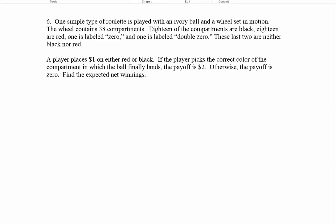We're going to find the expected value of the winnings. The player is placing a dollar bet, and red and black will have the same expected value because both have 18 compartments. This is not a combined probability with red and black together — the player is going to place the bet for either red or black, so we're going to calculate it for either color.